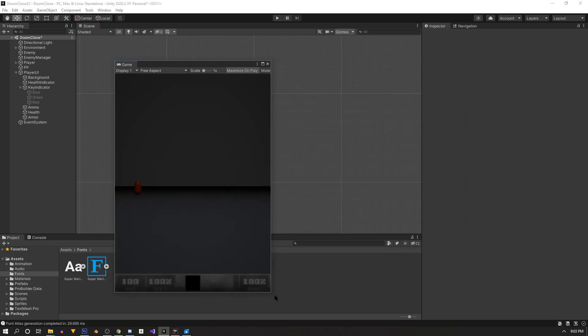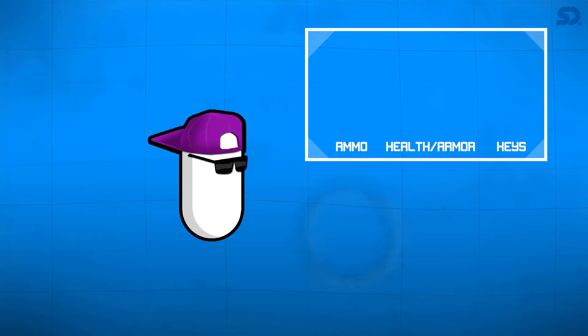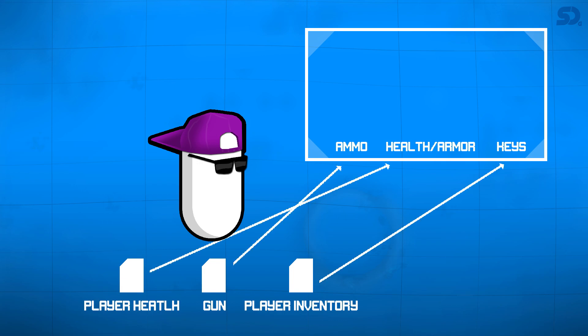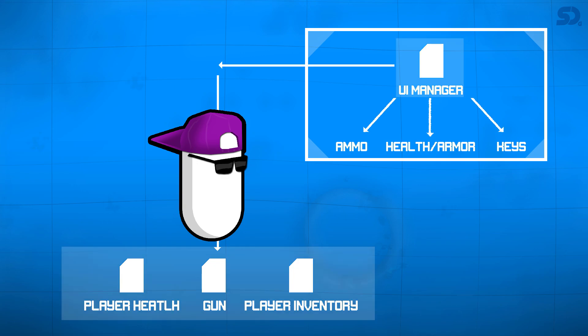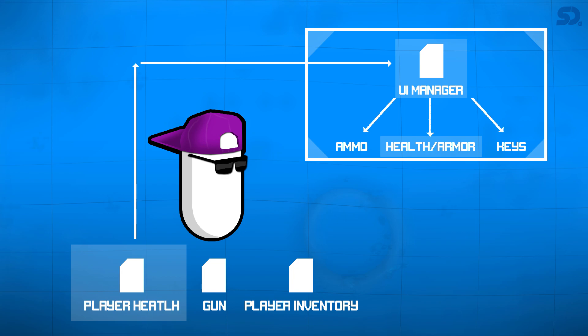Now we have a UI canvas and our player has these scripts. We could have each script change the value for each text element, but we'll use a UI manager instead that holds a reference to each text element. Rather than having the UI manager check each script every frame, it's better to only update values when needed — so each script will tell the UI manager when it's changed and it will update the correct value.